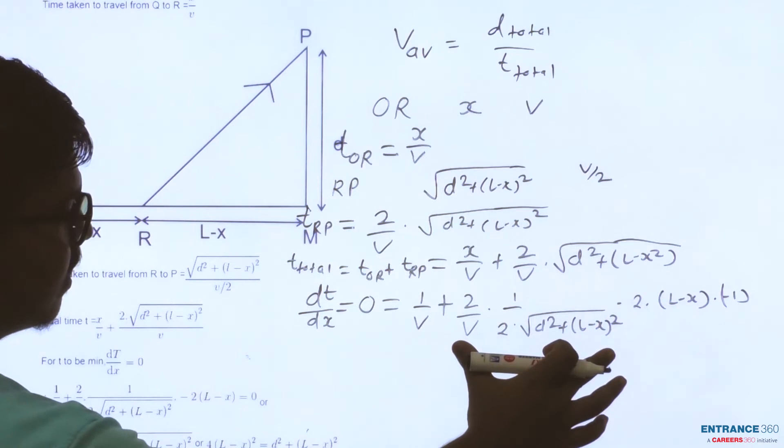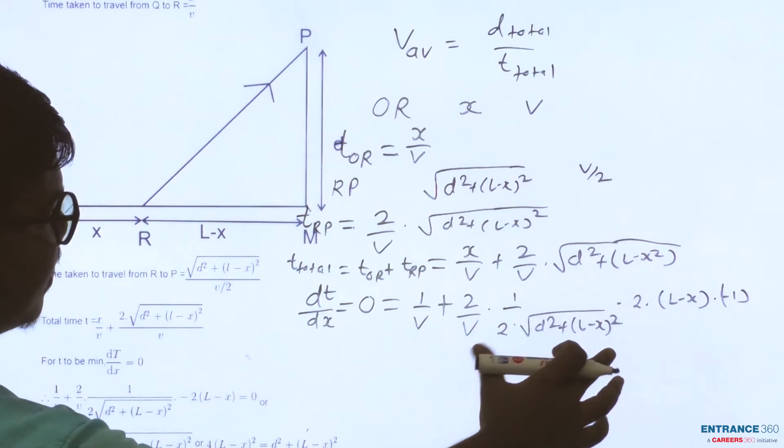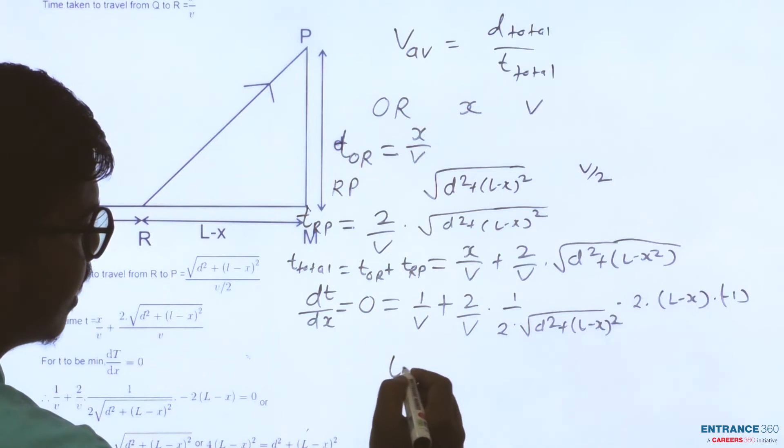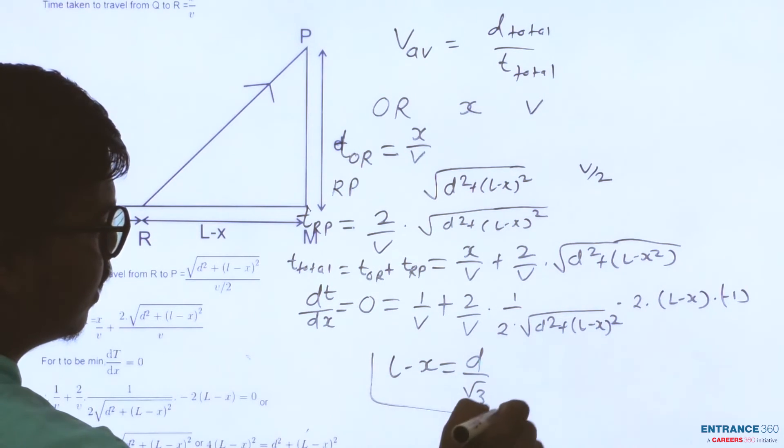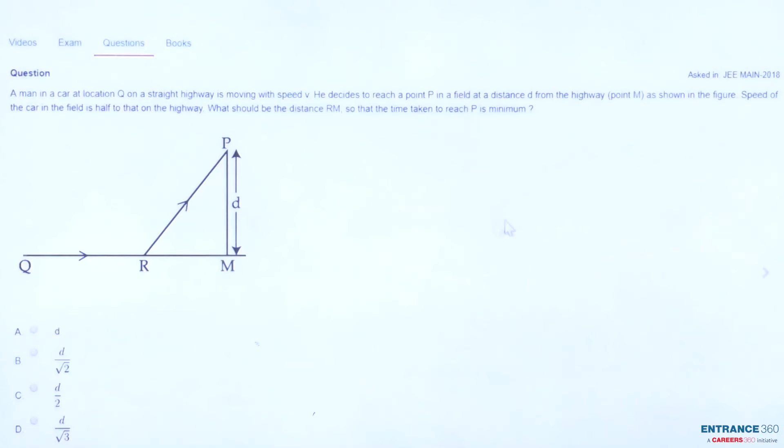So after solving this we get the value of RM, that is L minus X, as simply D/√3. Students, with the help of the figure and the concept we found out the correct answer which is option D.